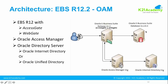Assuming the user exists in the FND user table, the linking happens automatically. An ICX session is created in the EBS database and a session is created in the EBS application tier. After that, the user can access EBS directly without going back to Oracle Access Manager. This is the complete flow for EBS R12.2 integration with Oracle Access Manager.